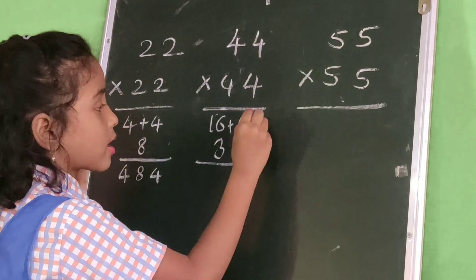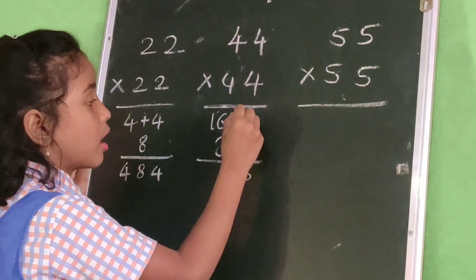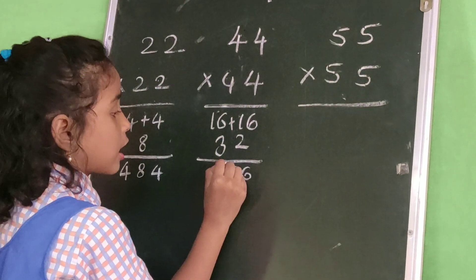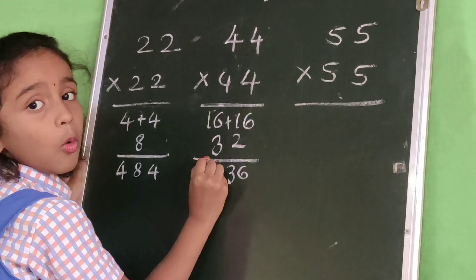Write down 2. Then 6 as this, 6. 1 plus 2 equals 3, 6 plus 3 equals 9. 1 carry. 1 as this, 1.